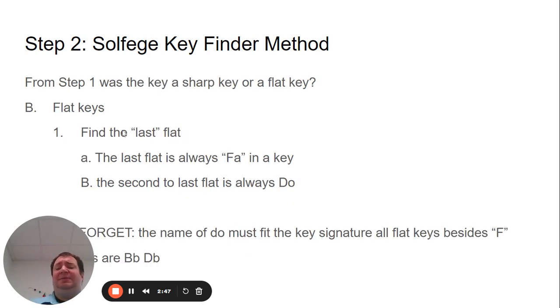Now, if we have a flat key, it's a little bit different. You still find the last flat, but the last flat is always fa in a key. The second to last flat is always do. But don't forget the name of do must fit the key signature. So all flat keys or all flat key signatures besides F major are something flat. If it's F major, there's one flat and it's just F. But everything else, like if the second to last flat is on B flat, then you would say it's B flat major.